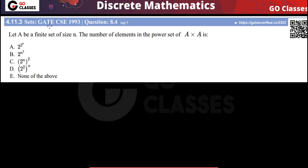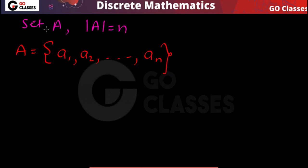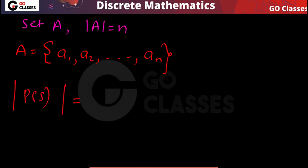Let's solve this GATE 1993 question. Let A be a finite set of size n, so the cardinality of set A is n. The question asks for the number of elements in the power set of A×A. For this, we need to know two things: first, if set A has cardinality n, what will be the number of elements in the power set of A? The answer is 2^n.